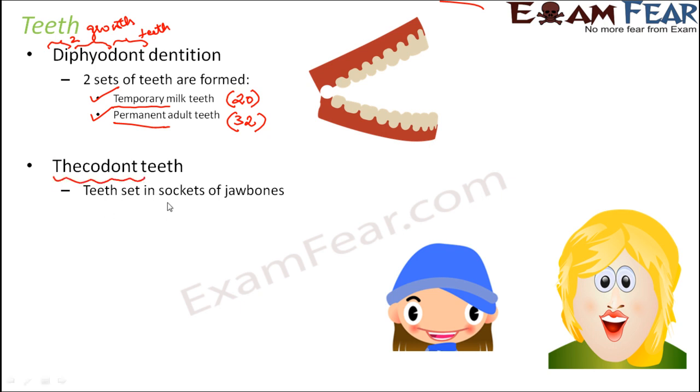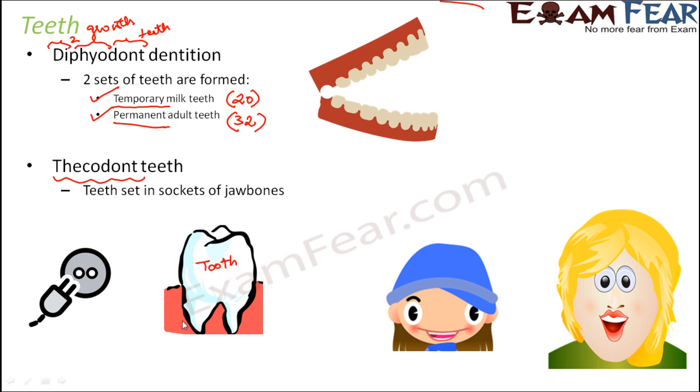What is the meaning of thecodont? The teeth in human beings are set in sockets of jaw bones. If you observe your tooth closely, you will see that each tooth is fitted in the socket, like how you have a plug and a socket. The tooth fits into the socket exactly, and this socket is nothing but the jaw bone. If you observe your tooth in the mirror, you will see the jaw bones which are present below, pinkish reddish in color. The way a plug fits into the wall socket, the tooth also fits into the jaw bone socket, and this type of tooth is known as thecodont.